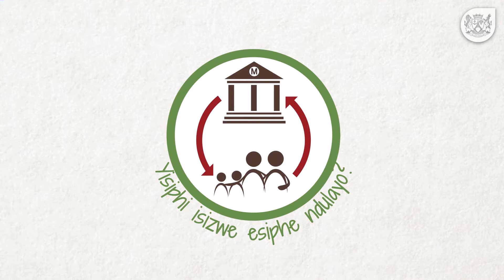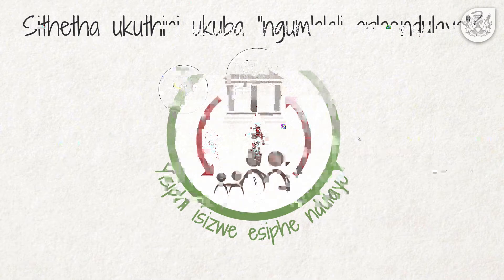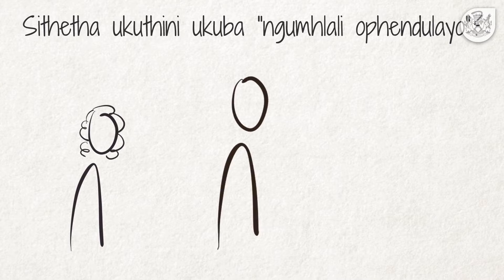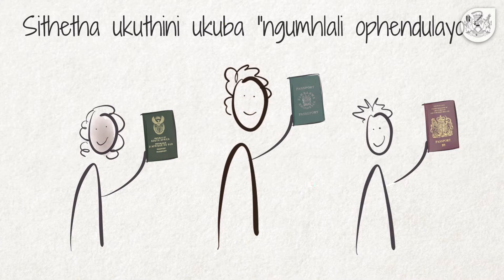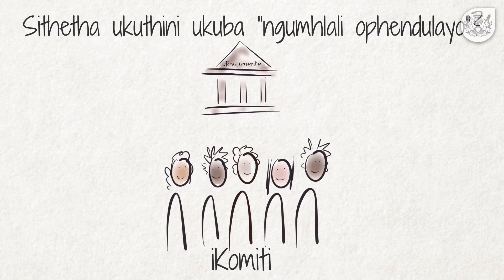Sithetha ukuthini ngokuhlali okuphenduliyo? Ukuphendula kuthetha ukuba nenxaxheba kwimiba enikwa umlomo. Abantu bayaphendula xa bethabatha inxaxheba kwezinto ezibaphazamisa. Ngelixa ubuhlali kunxulumanisa kwenye imiba nebuze ubume ngomthetho, kule meko ubuhlali kupekisela umntu oliLungu loluntu kwingingqi ethile. Umhlali ophenduliyo ngoko ngumtu othabatha inxaxheba ngenjongo zokuphumeza amalungelo kwanye nokuphumeleza emisebenzini yabo.